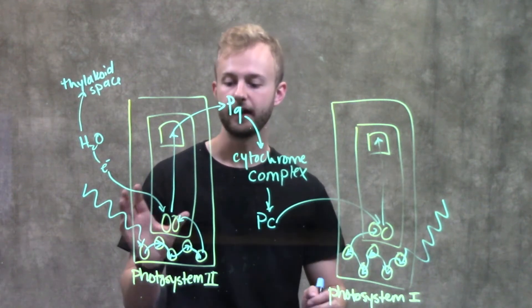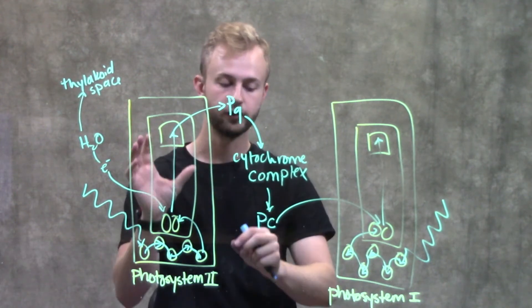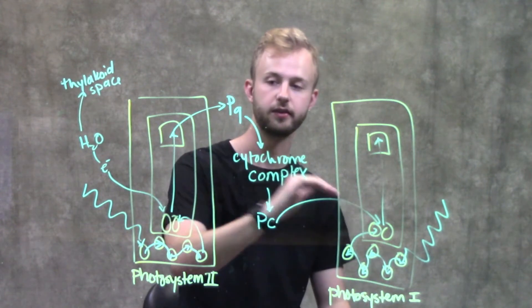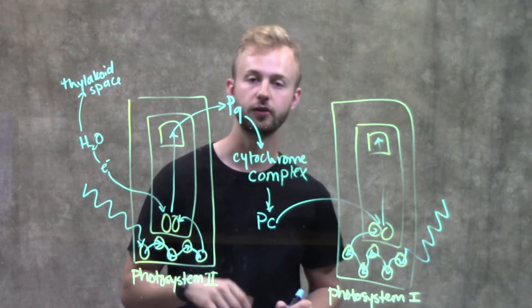That is how electrons move from photosystem II to photosystem I - through this connection with the P700 chlorophyll molecules.